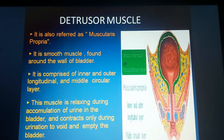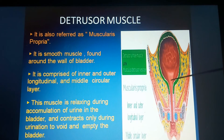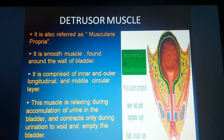Coming to the detrusor muscle, also referred to as muscularis propria. It is a smooth muscle formed around the wall of the bladder. It is comprised of inner and outer longitudinal and middle circular layers. This muscle relaxes during accumulation of urine in the bladder and contracts only during urination to void and empty the bladder.